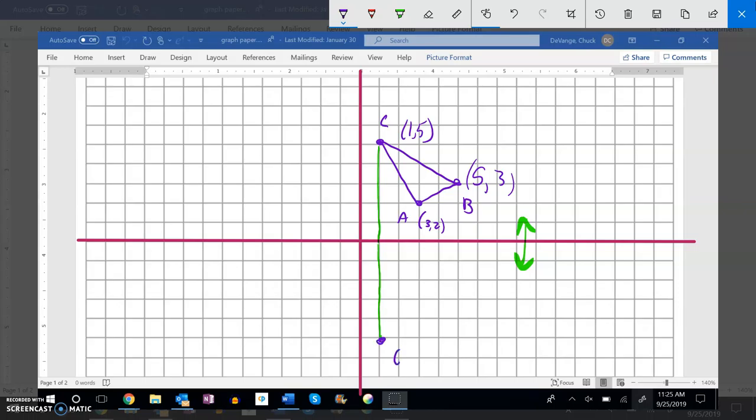So this point C that's at 1, 5 will get down here to 1, negative 5, and that's C prime. This point that's at 3, 2 comes across and down, and it's still at 3, but now it's at negative 2.